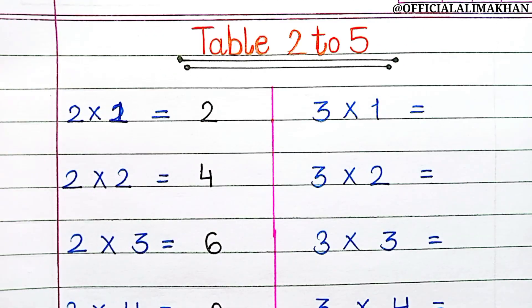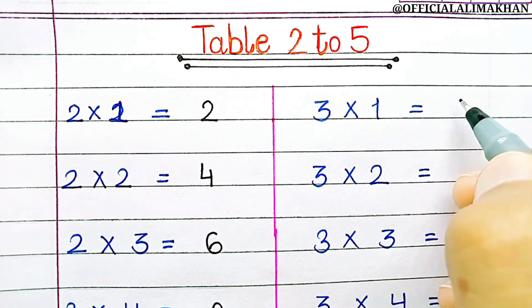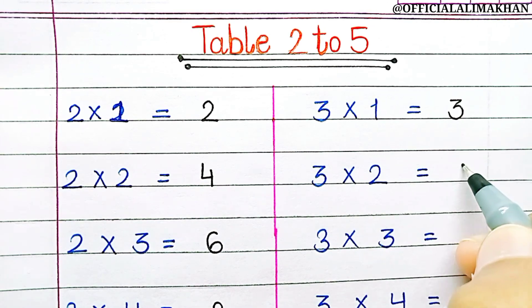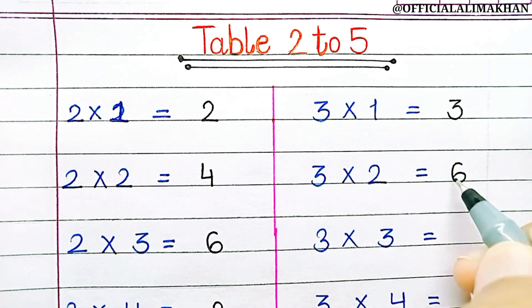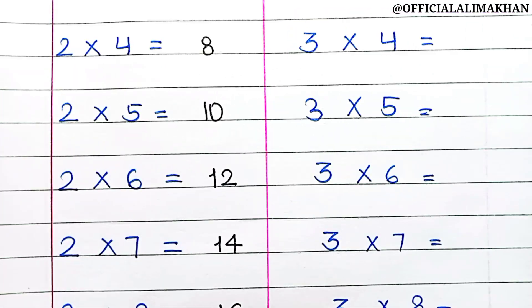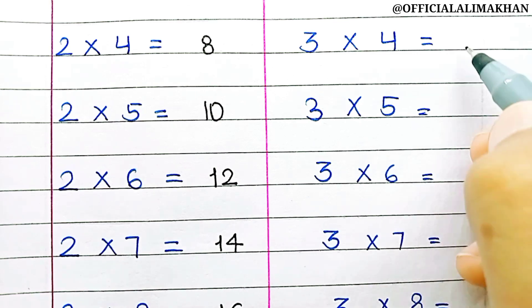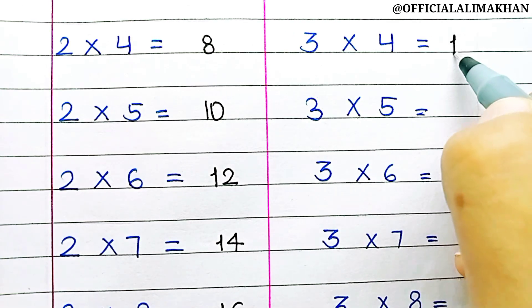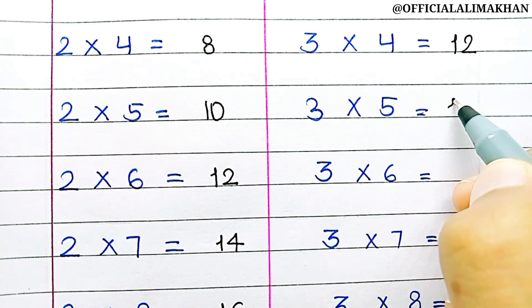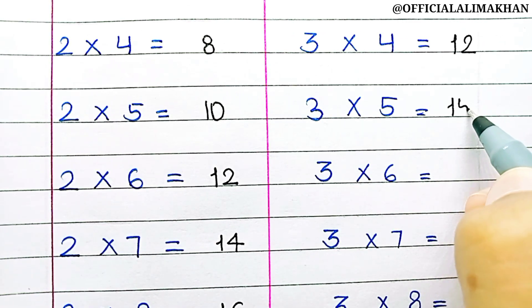3 1s are 3, 3 2s are 6, 3 3s are 9, 3 4s are 12, 3 5s are 15.